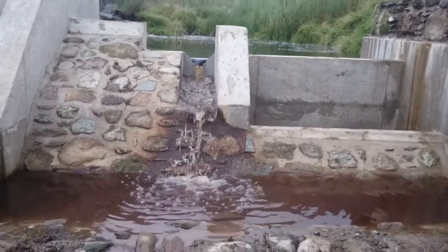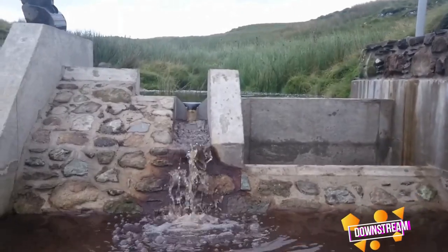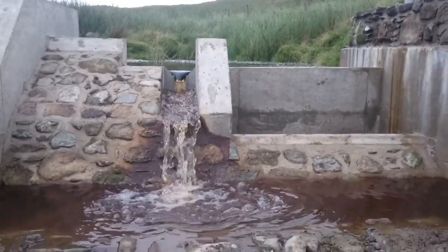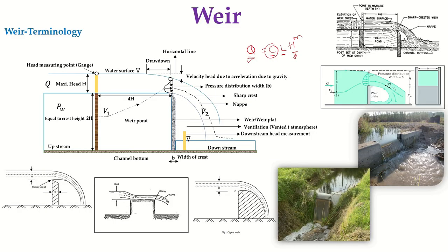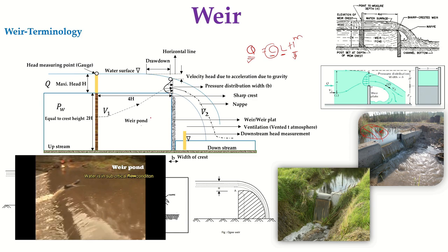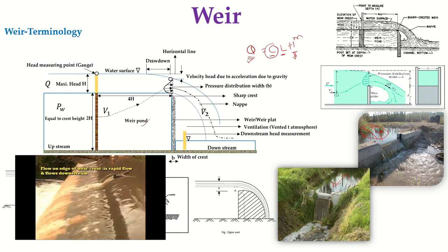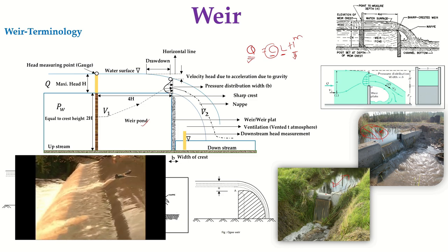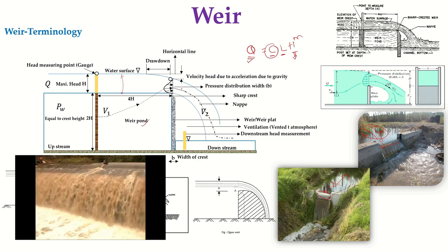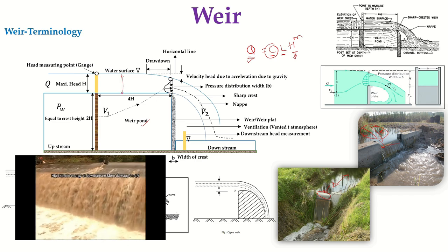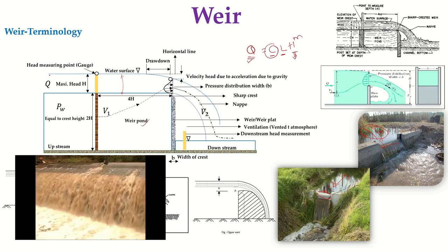The weir can be defined as a concrete or masonry structure constructed across your canal, river, or irrigation channels. In its terminology, the amount of water stored behind your weir is called simply the weir pond. The excess water moving over your weir is referred to as your head.